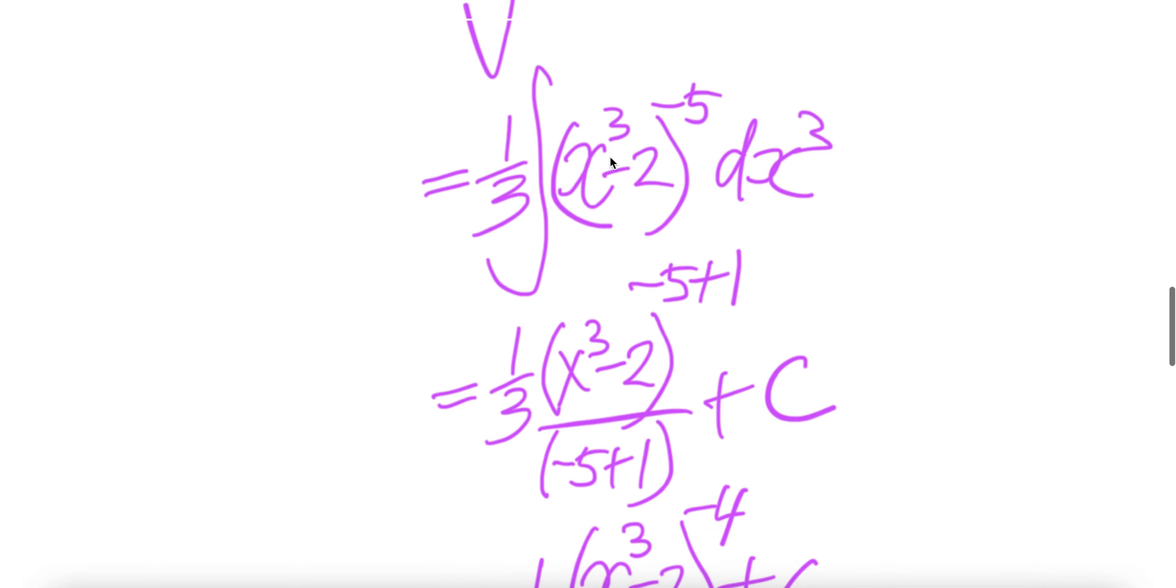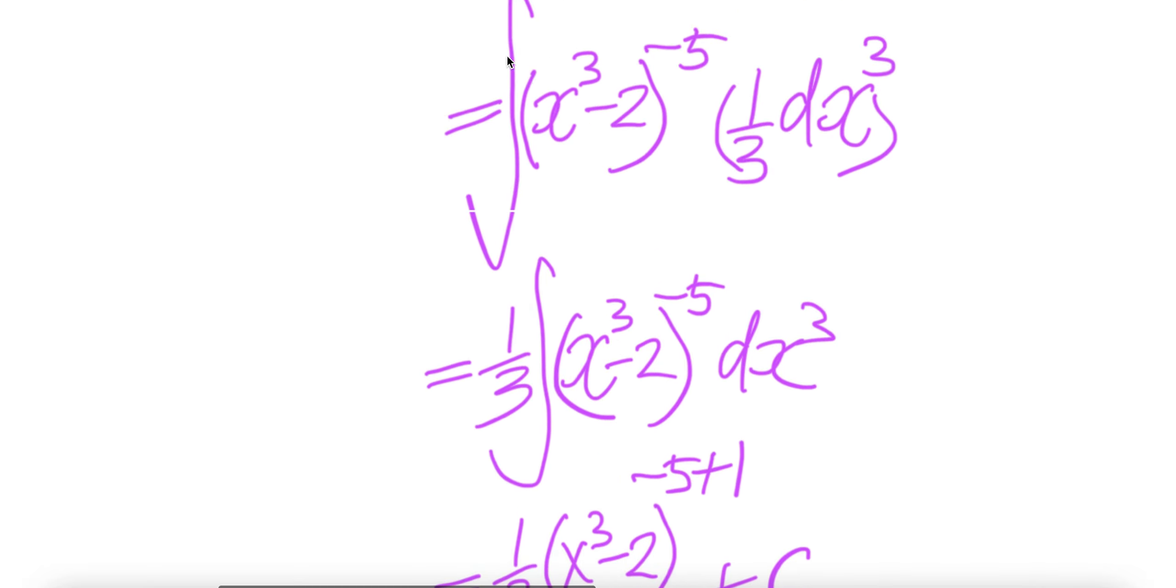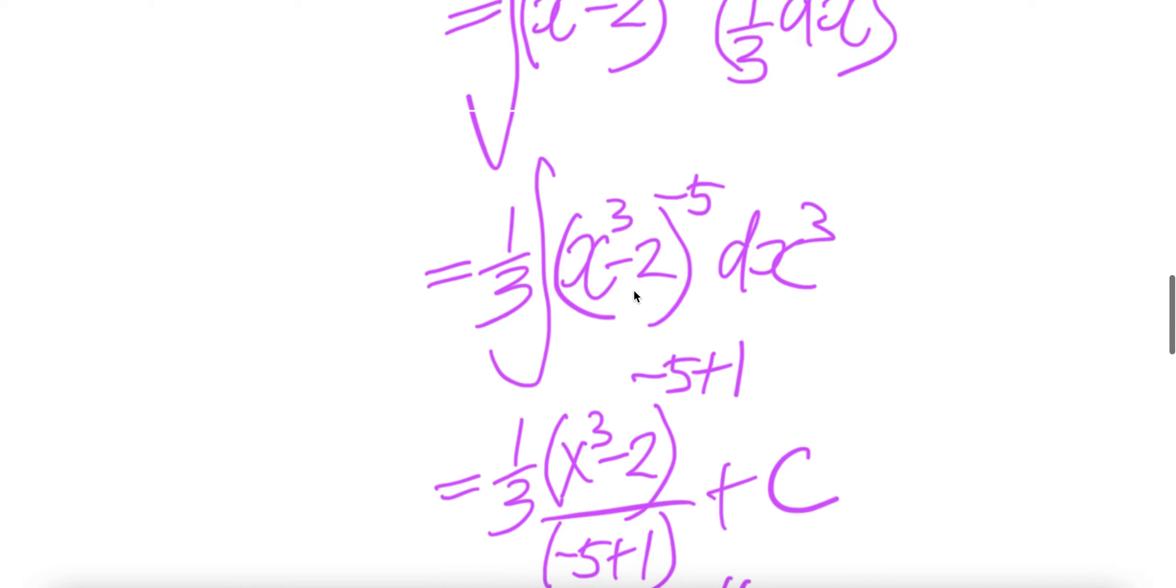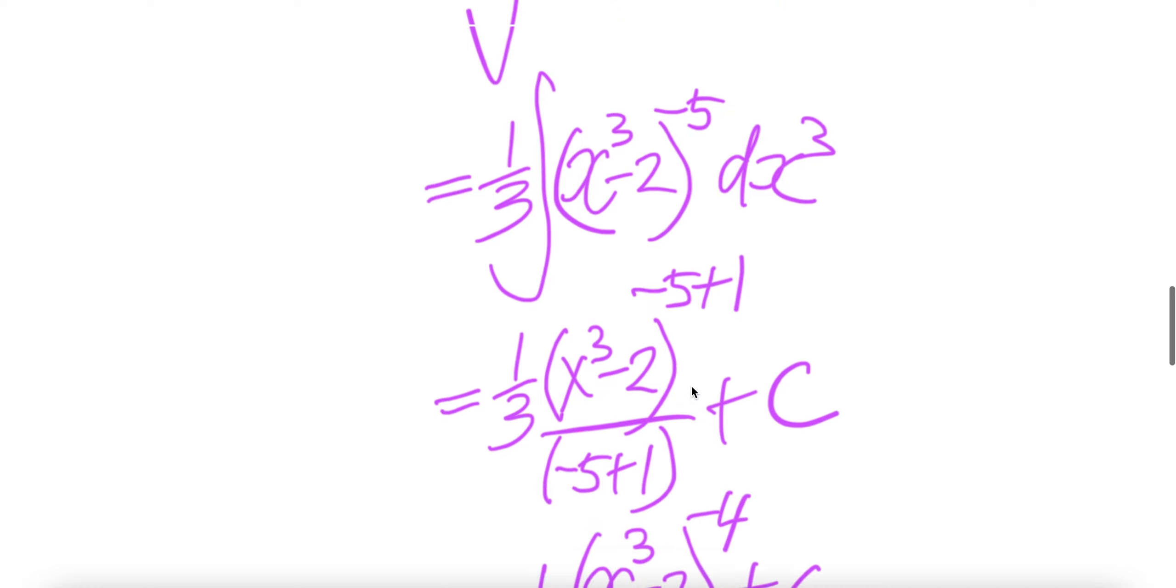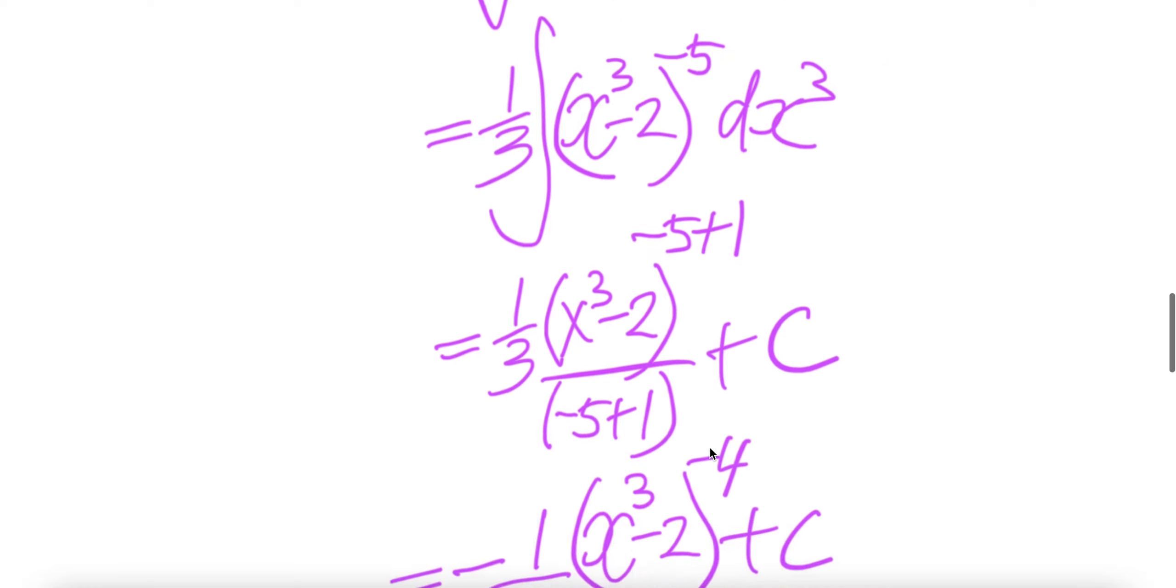Now at this stage, after you brought the one third out from the integral, you are able to output the result of the integral: (x³-2) to the power of negative 5 plus 1, over the same exponent downstairs, plus C.